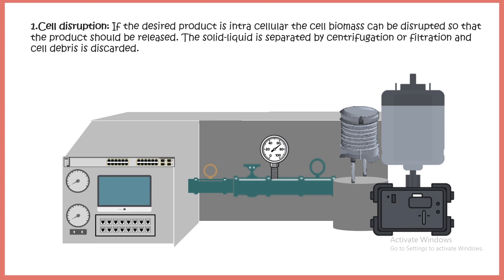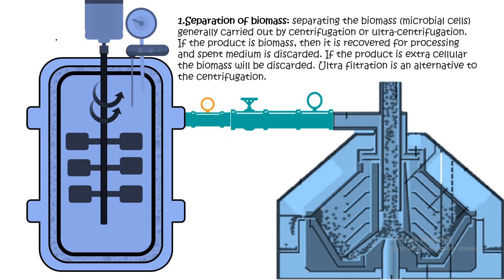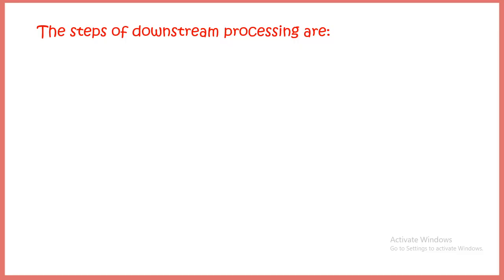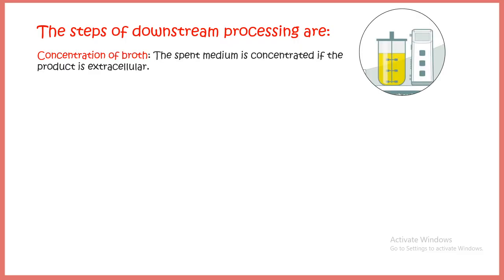For intracellular products such as enzymes, you must first disrupt the cell. Industrial-grade pistons break apart the cells by mechanical shearing to release the product into solution. Once the product is soluble in solution, the cell debris is removed by centrifugation. The supernatant containing the enzyme of interest is then collected and passed through several downstream processing steps such as column chromatography.